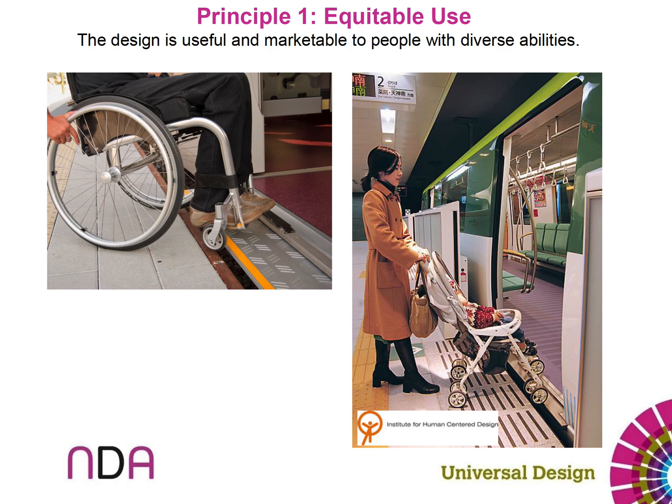Just like graphic design principles and the interior design elements and principles, universal design has principles of its own. So the first principle is equitable use. The design is useful and marketable to people with diverse abilities. Here we see two different scenarios attempting to get onto a subway. What do you think about this?